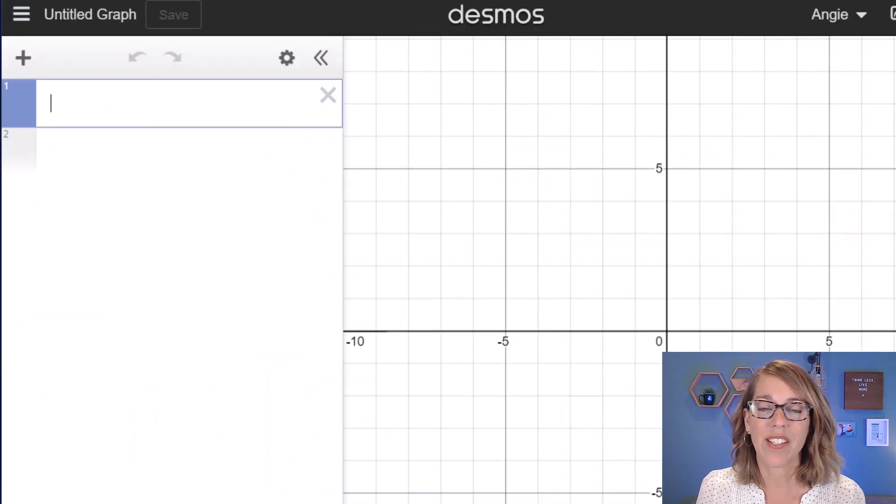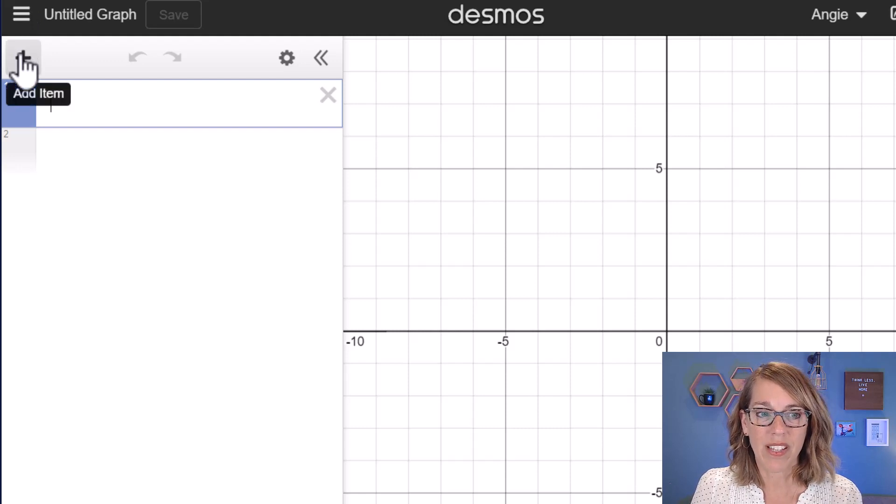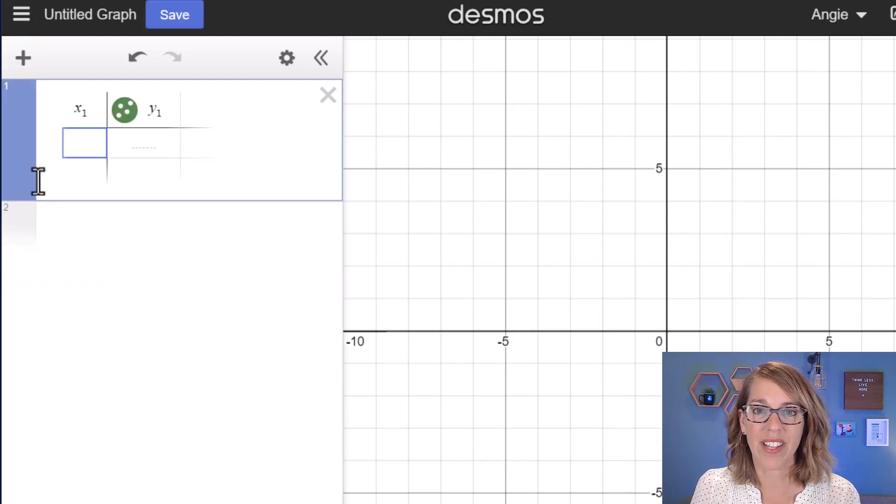Now over into Desmos, there's two ways that you can enter your data. You can either click the plus sign and then add a table and type them in manually, but I don't have to do that because I just copied my data.